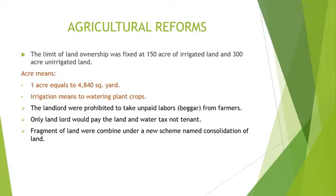One acre equals 4840 square yards. Irrigation means watering the plants and crops. Landlords were prohibited from taking unpaid labor from farmers. Only the landlord would pay land and water tax, not the tenant. Fragments of scattered land were combined under a new scheme named consolidation of land, as fragmented land is an obstacle to agricultural productivity and modernization.